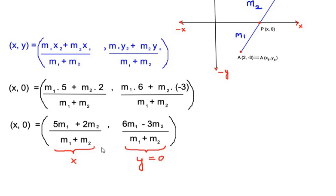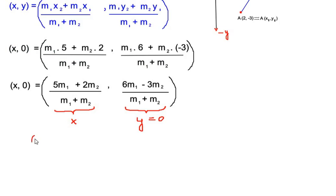So let us just equate these two. So we get here (6m₁ - 3m₂)/(m₁ + m₂) is equal to 0. That is by equating the y coordinates.